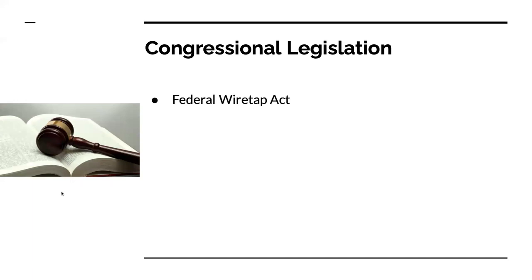Moving from the amendments over to some congressional legislation, like the Federal Wiretap Act. This law states law enforcement is prohibited from using a wiretap without a judge's permission. A wiretap is authorized by the Justice Department, signed off by a U.S. court or court of appeals judge, and valid for 30 days. Under this law, service carriers may on occasion monitor and intercept communications to combat fraud and theft of services. This law was amended by the Electronic Communications Privacy Act of 1986 to include transmissions from a computer.